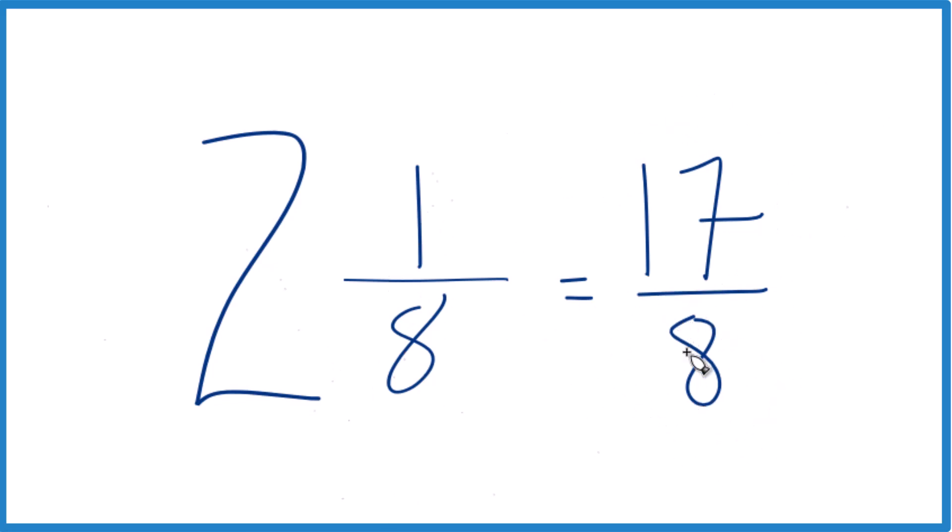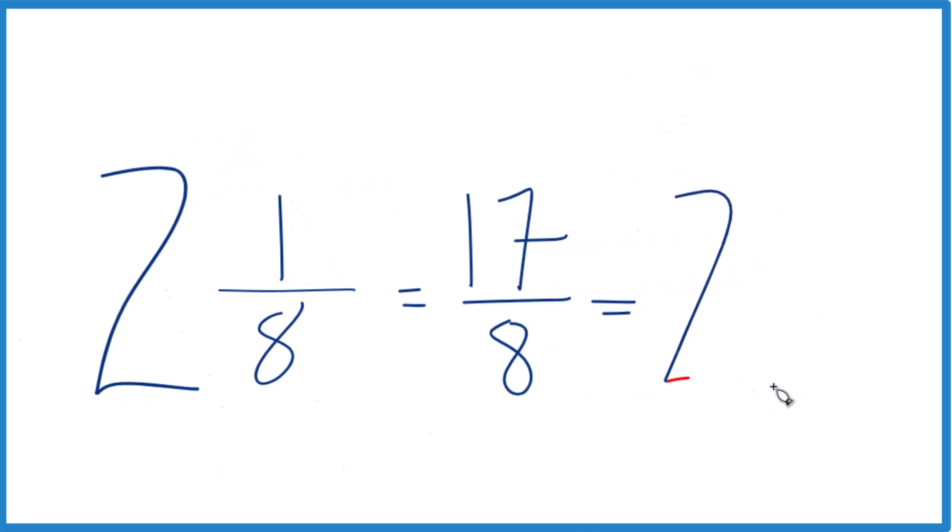We can even check our work, because 8 goes into 17. 2 times 8 would be 16 with 1 left over. Bring that 8 across, and we get 2 and 1/8. And that's the same mixed number that we started with.